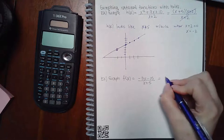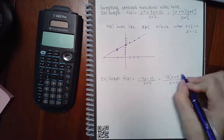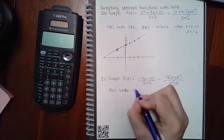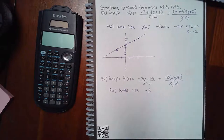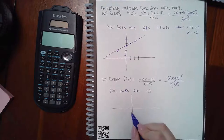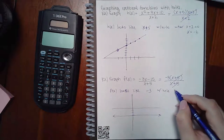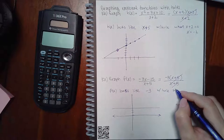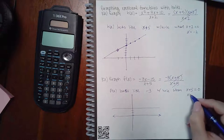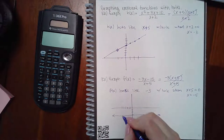This one, if I simplify it, I factor out a negative 3 and get x plus 5 over x plus 5, which means f of x looks like negative 3. That's just a horizontal line at negative 3. But it's going to have a hole when that canceled factor equals 0, which means at x equals negative 5. So there's a hole right there at x equals negative 5 on the line y equals negative 3.